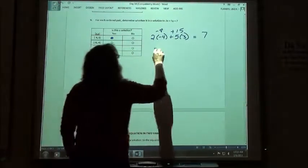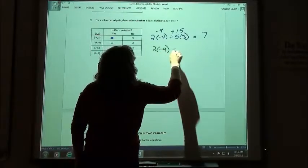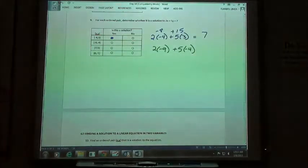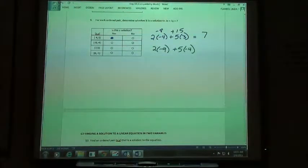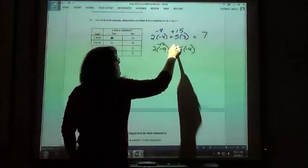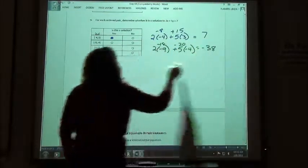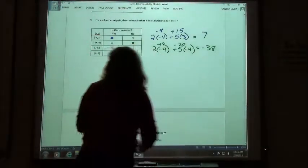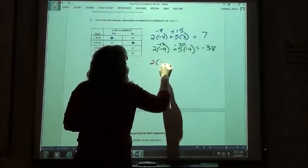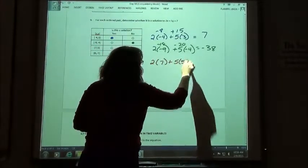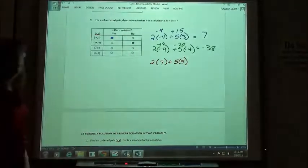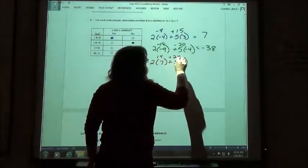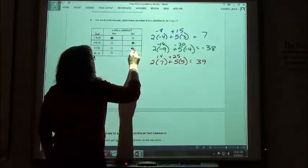I'm going to try the next point. 2 times my negative 9 plus 5 times my negative 4. If I do that problem, what do I get? Negative 38. Negative 18 minus 20 is negative 38. Well, that's not 7, so I'm going to check no. The next one: 2 times 7 plus 5 times 5. 39, 14 plus 25. Again, that's not 7.